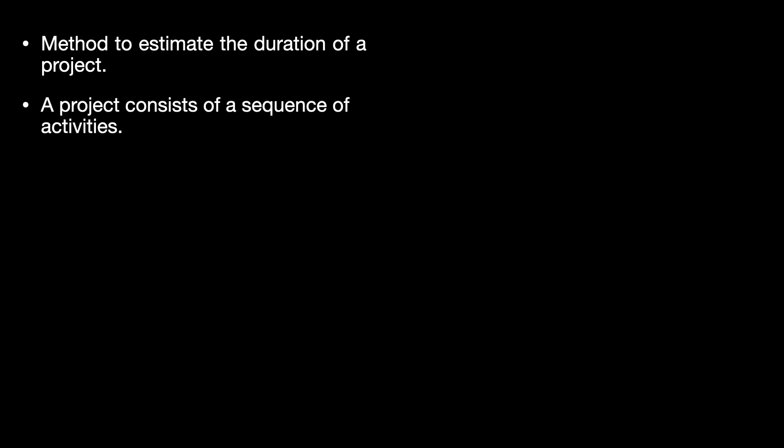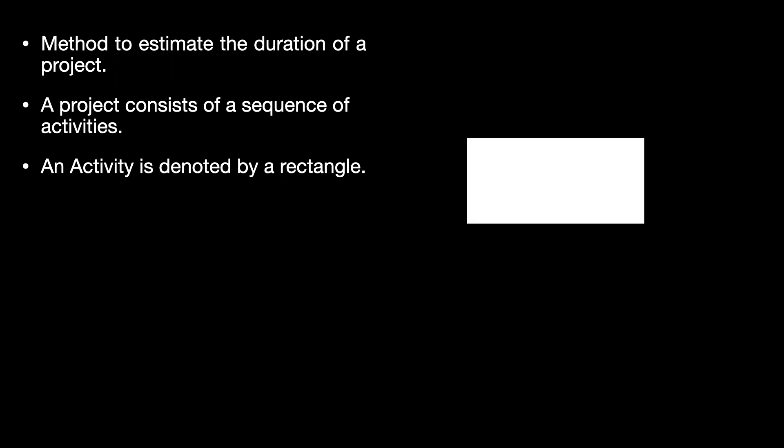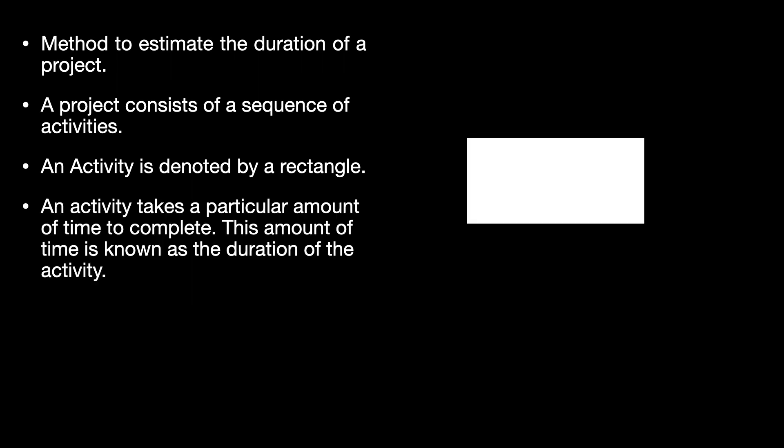The critical path method is a method which is used to estimate the duration of a project. A project consists of a sequence of activities and not just one activity. An activity is denoted by a rectangle, and because an activity is usually a process, it takes a particular amount of time to complete. This amount of time is known as the duration of the activity.